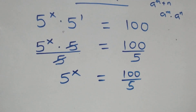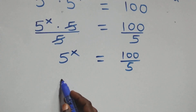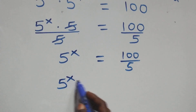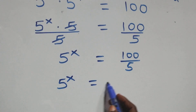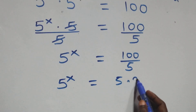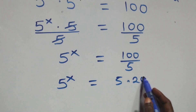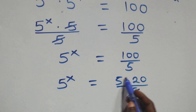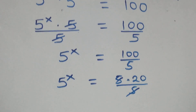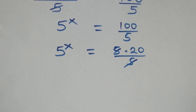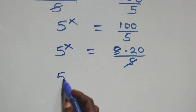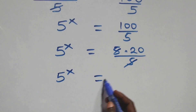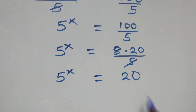Then also, this can be written as 5 raised to power x equals to 5 times 20 over 5. The 5s cancel each other. This becomes 5 raised to power x equals to 20.